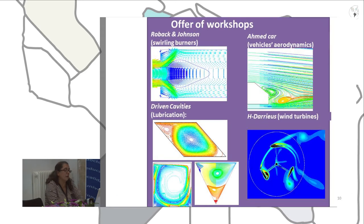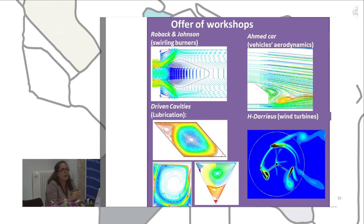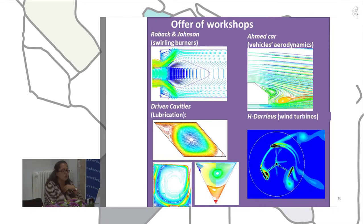Here we have a sample of different workshops. In the upper left corner, we have the square cavity, where the parameter changed is the Reynolds number to reproduce different recirculation zones. In the top right corner, we have the aerodynamics of a vehicle — for instance, the Ahmed car body — where we change the inclination of the rear geometry to reproduce different wakes. In the bottom left corner, we have driven cavities with fixed and moving walls reproducing lubrication-type flows. We also have a vertical axis wind turbine where the parameter changed is the solidity to observe its effect on the incident flow.